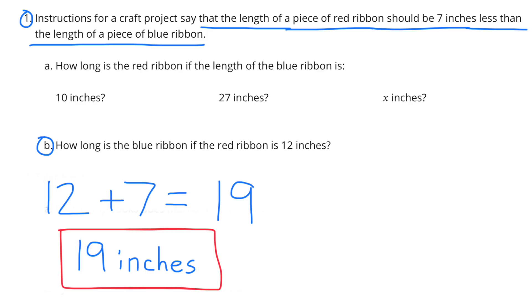B. How long is the blue ribbon if the red ribbon is 12 inches? If the red ribbon is 12 inches, the blue ribbon would be 7 inches longer. So 12 plus 7 equals 19. 19 inches.